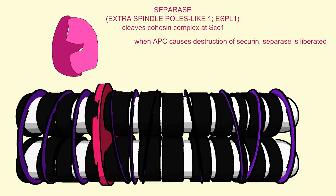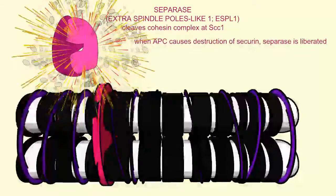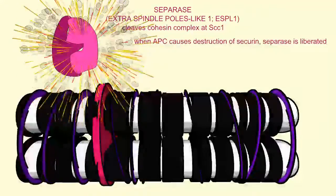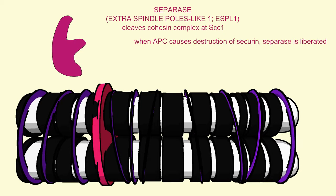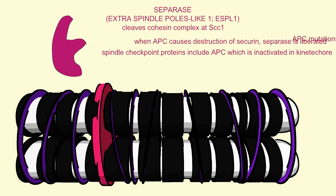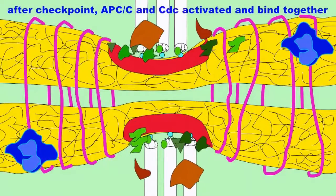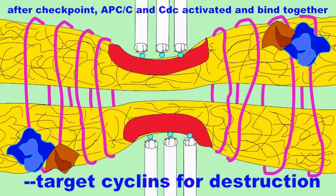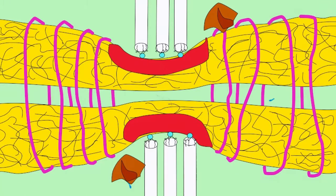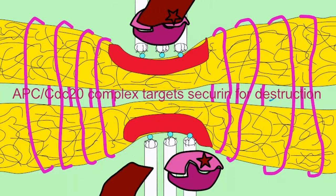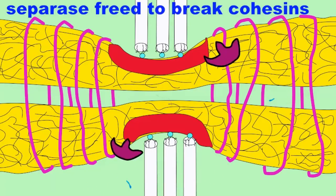The securin protein will remain bound to separase until it is targeted for destruction. This happens when two components of the anaphase-promoting complex — the APC protein and CDC20 — are activated. This activation only occurs when the chromosomes are aligned properly, because if chromosomes are aligned improperly, this could cause an irregular segregation of chromosomes, which could cause a cancerous aneuploidy.